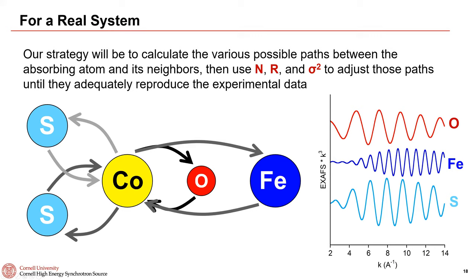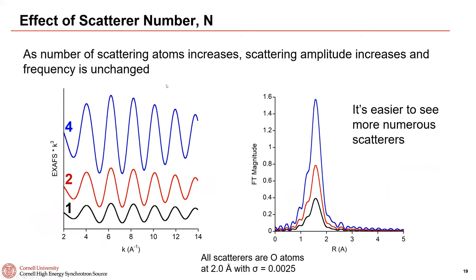Let's look at the effect of each parameter. Starting with coordination number — the number of scatterers: starting with one oxygen, then two, then four, you can see that as coordination number increases, the amplitude of the EXAFS increases. In the Fourier transform, intensity increases linearly with coordination number. So it's much easier to see interactions when you have more scattering partners.